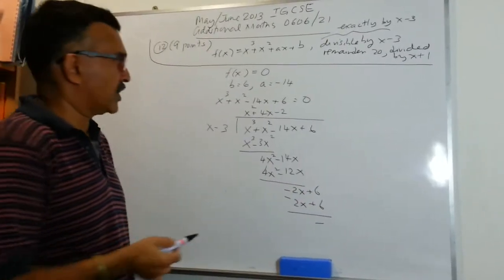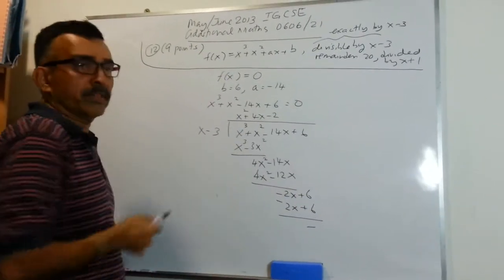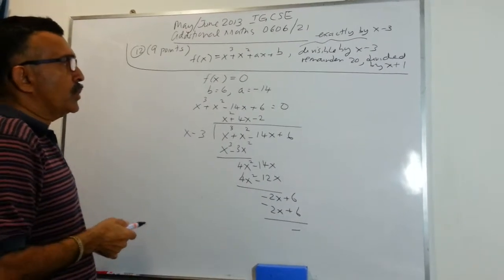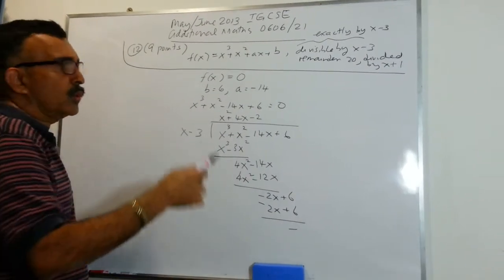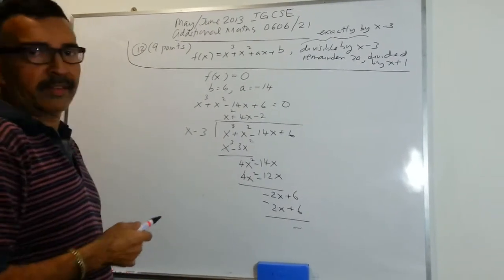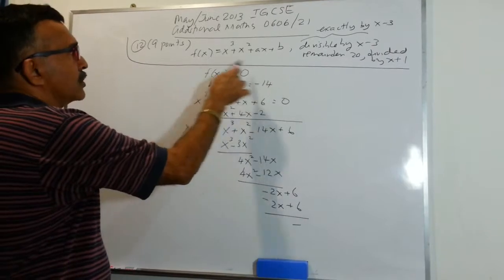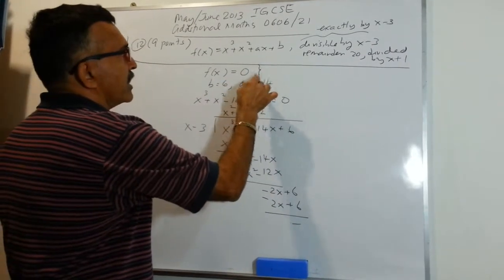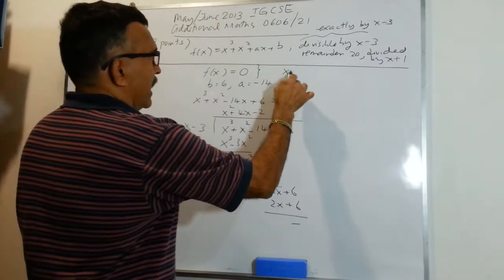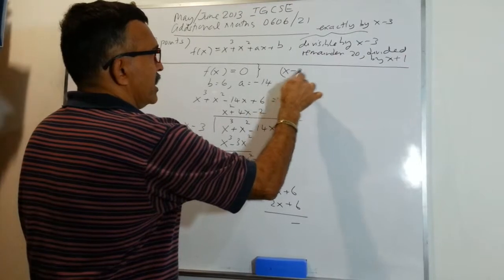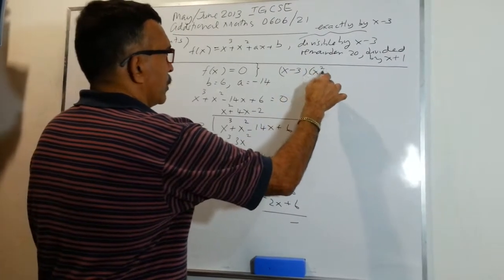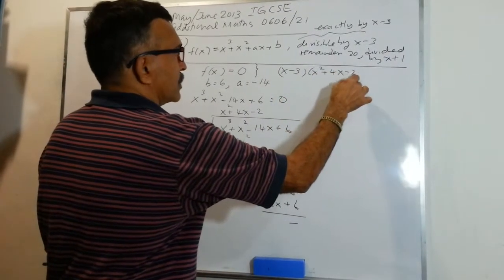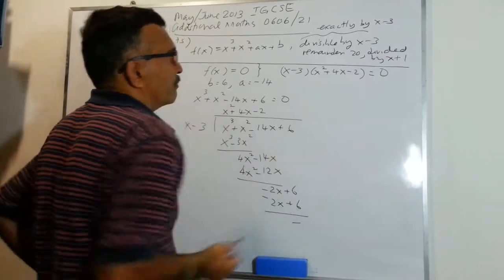The remainder is 0, because this is exactly divisible by x minus 3. So now we are going to rewrite the equation f(x) equals to 0 as x minus 3 times x squared plus 4x minus 2 equals to 0.